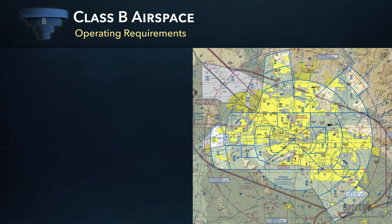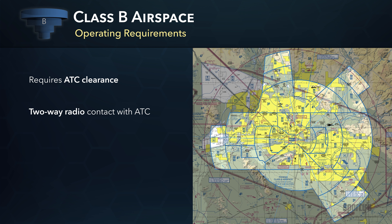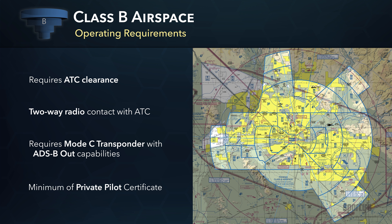Before operating in Class B, you must receive authorization from ATC, maintain two-way radio communications with ATC, and have an operating transponder with altitude reporting and ADS-B out capabilities. Private pilots may operate at all airports within Class B.